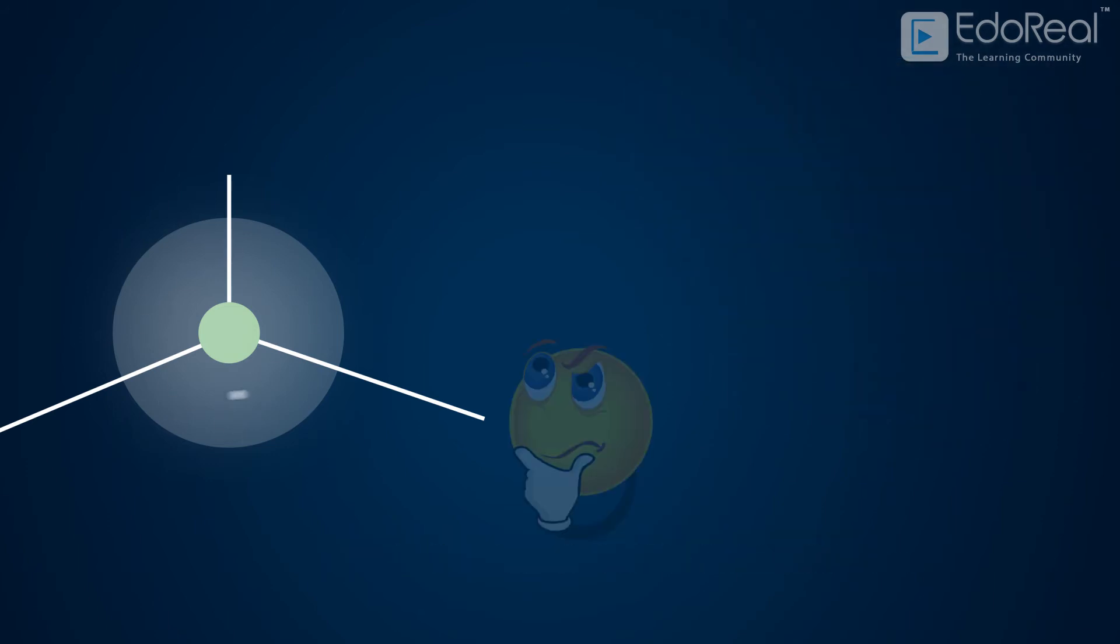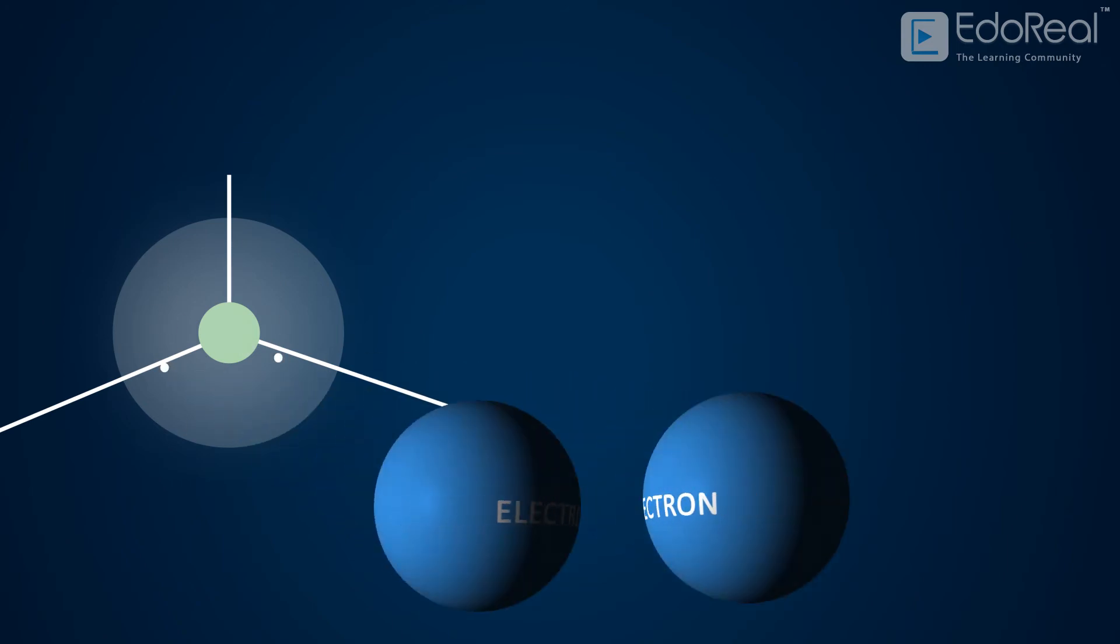What if another electron comes? This second electron is also found to be moving in the same space as the earlier electron. But scientists observed that the second electron always spins opposite to the first one.